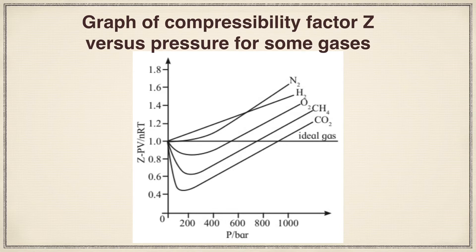At that low pressure, nitrogen gas acts as an ideal gas. In each of the scenarios, you can see that at a particular pressure they are meeting that ideal gas line. That means at one point in time they can act as ideal gas if that pressure and temperature are maintained. But other than that, every time they are said to be real gases.